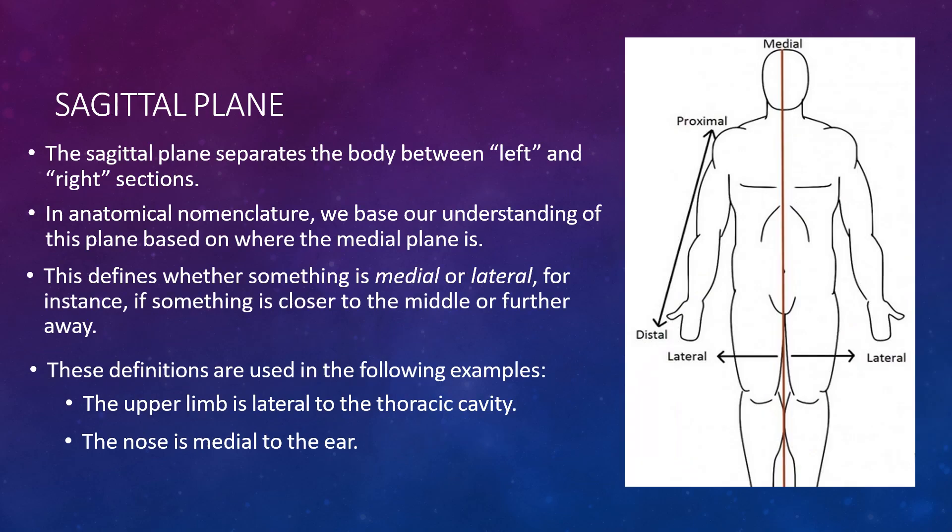The sagittal plane separates the body between left and right sections. In anatomical nomenclature, our understanding of this plane is based on where the medial plane is, which defines whether something is medial or lateral — that is, whether something is closer to the middle or further away. For example, the upper limb is lateral to the thoracic cavity, and the nose is medial to the ear.